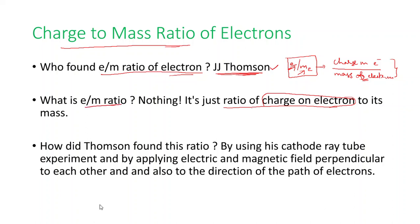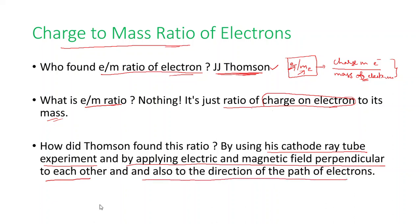The e by m ratio is just the ratio of charge on the electron to its mass. Thomson found this ratio using his cathode ray tube experiment, by applying electric and magnetic fields perpendicular to each other and also perpendicular to the direction of the path of electrons.